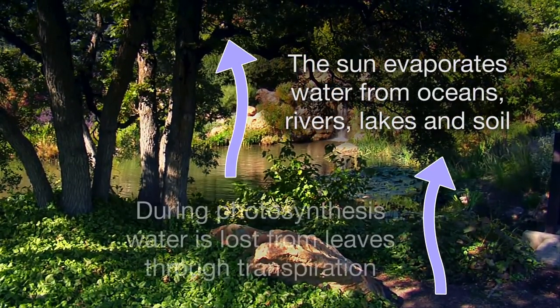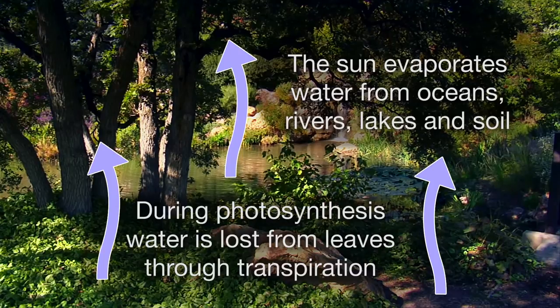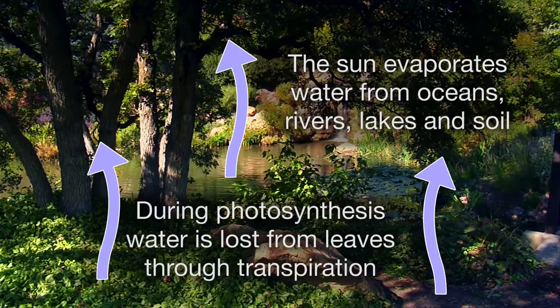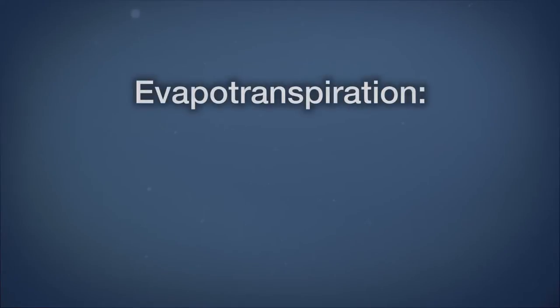During photosynthesis, water is lost from leaves in a process called transpiration. Together, these two processes are referred to as evapotranspiration.